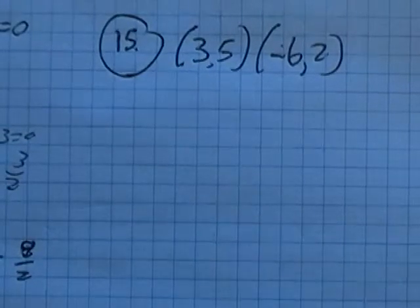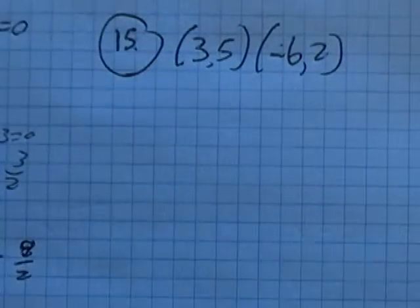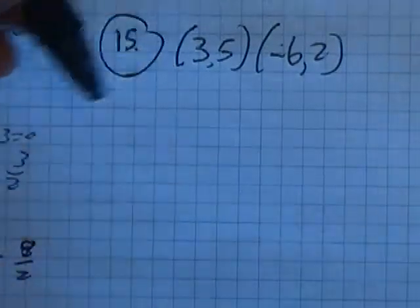So I'm going to need the slope, and I already have a point, so I can put it into point-slope form. So let me find that slope.